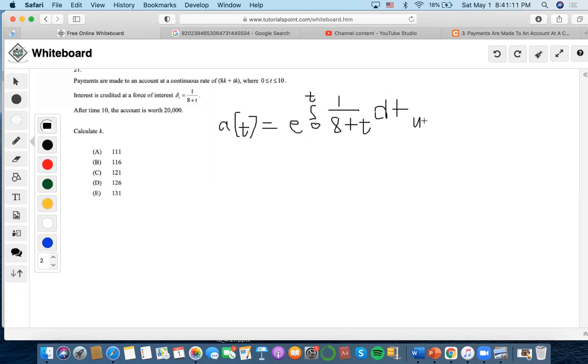u is 8 + t, so du must be 1 dt. So 1/u means that this would become ln u.